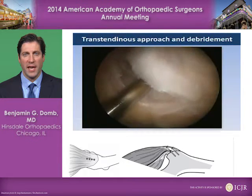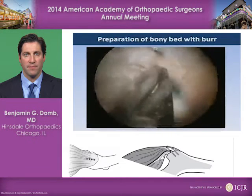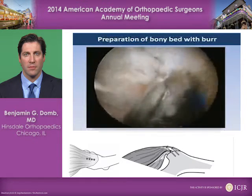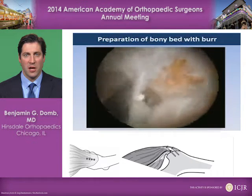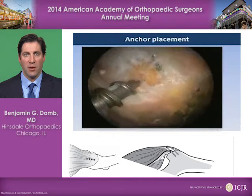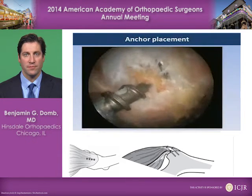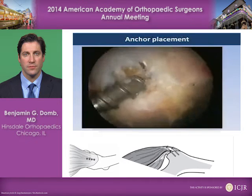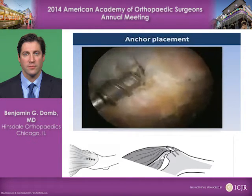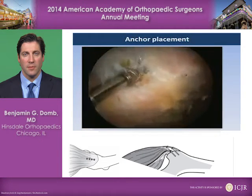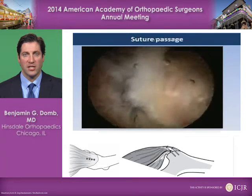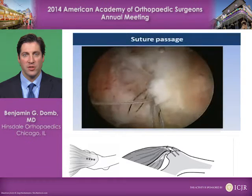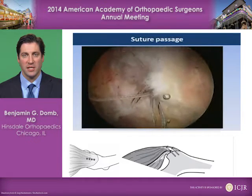We'll then perform a decortication of the lateral facet in order to create a bleeding bed of bone for healing. Next, we'll place anchors through this longitudinal split. The anchors, of course, will provide us with a means of repairing the good tendon to the bone. After the anchor has been placed, any variety of suture shuttle instruments may be used in order to accomplish the passage of the suture through the anterior and posterior limbs of the tendon. The diagram at the bottom of the screen illustrates the mattress configuration in which the sutures will be passed.